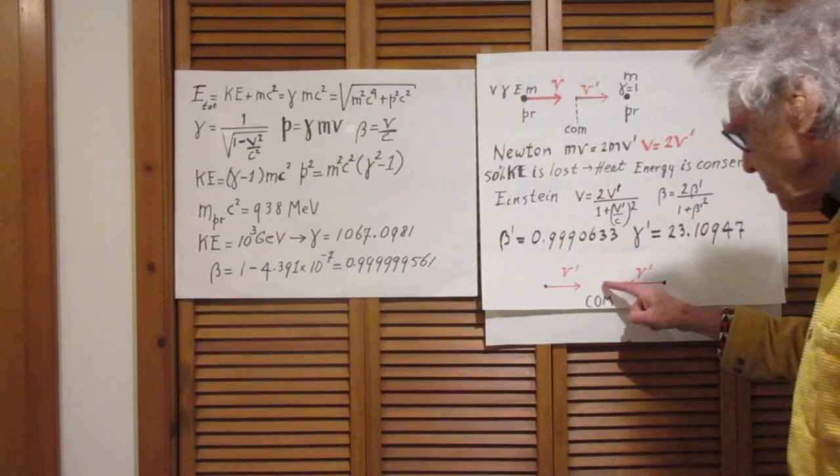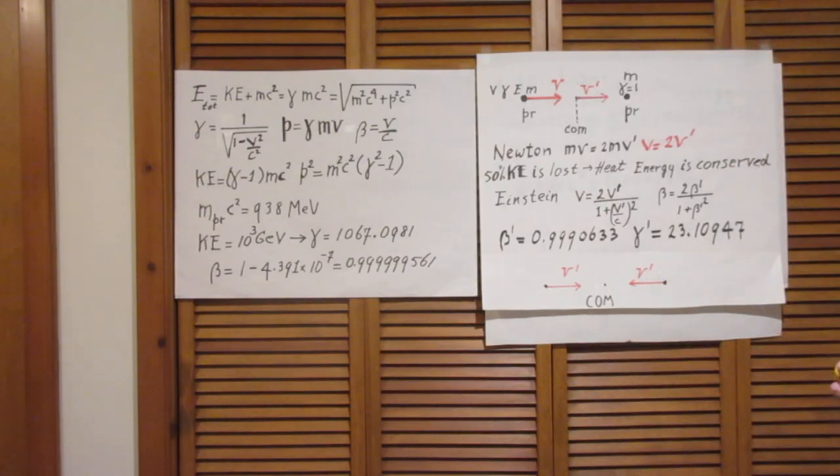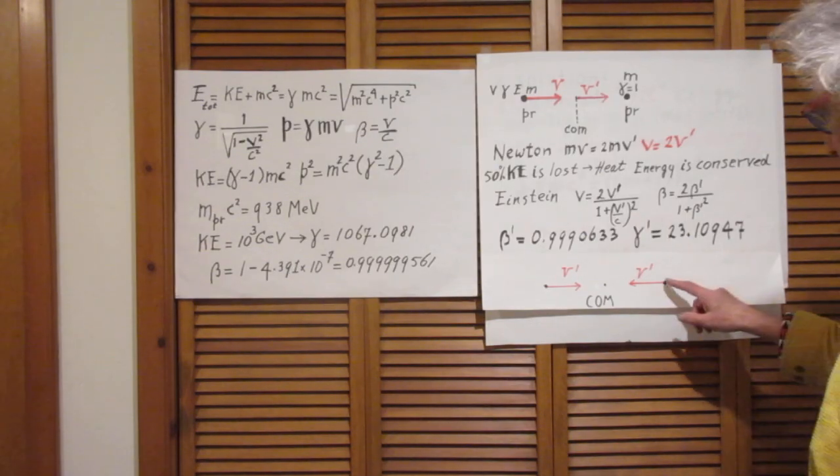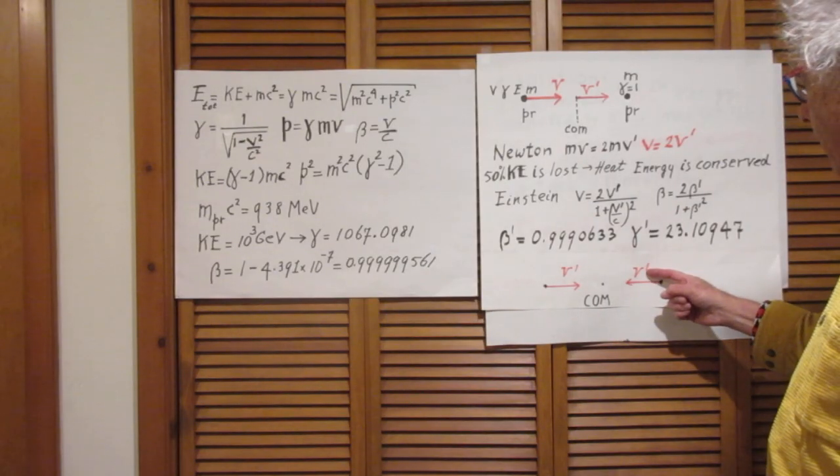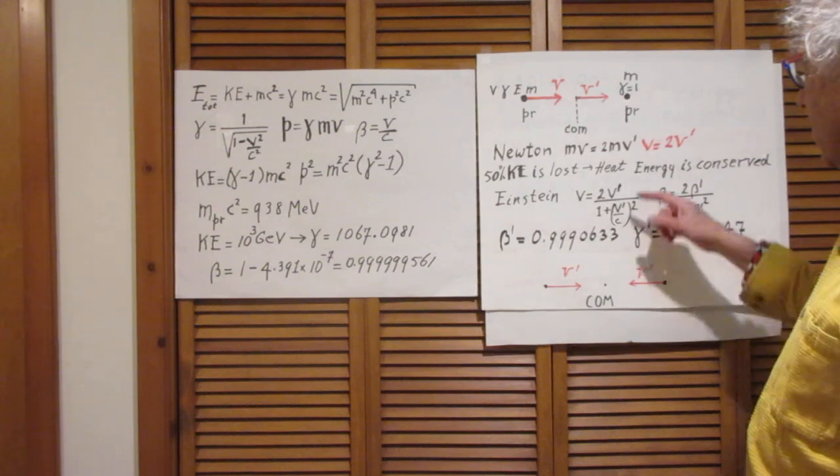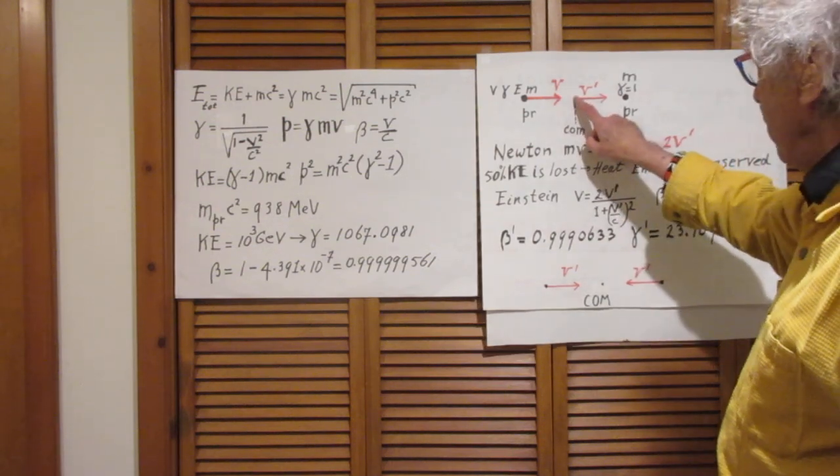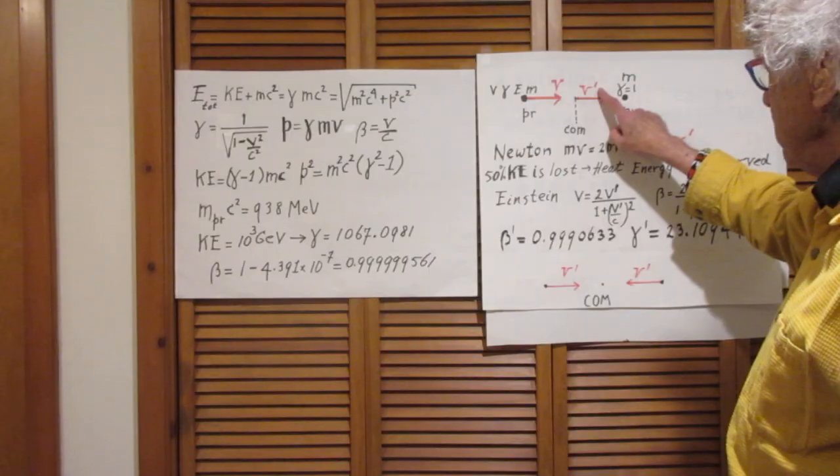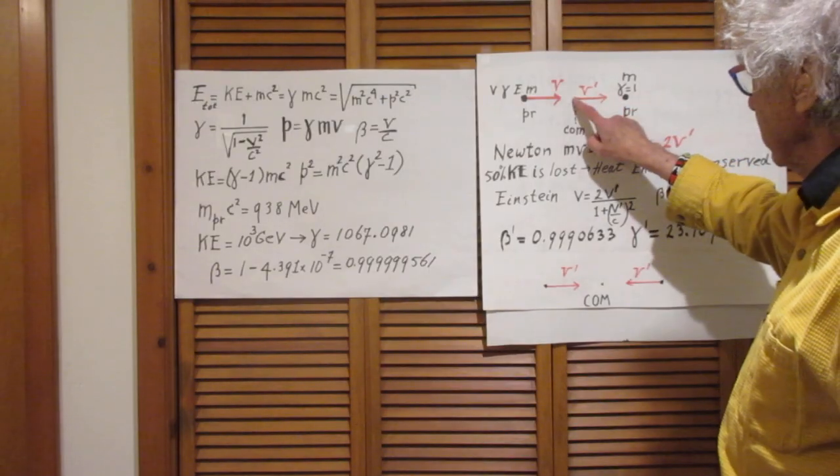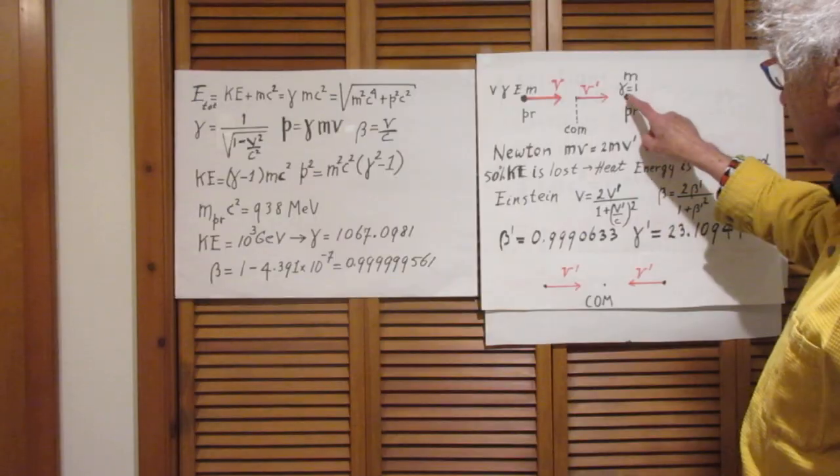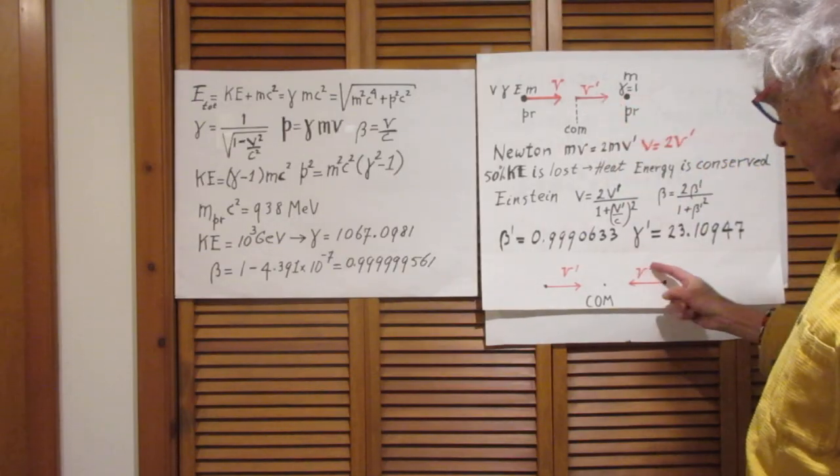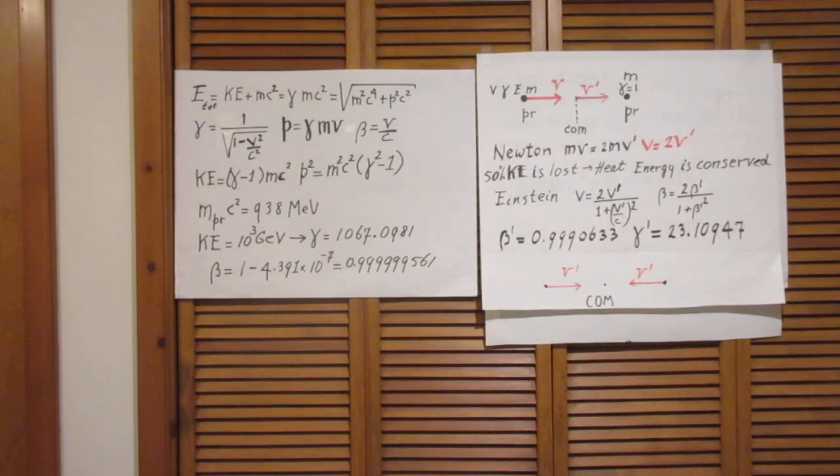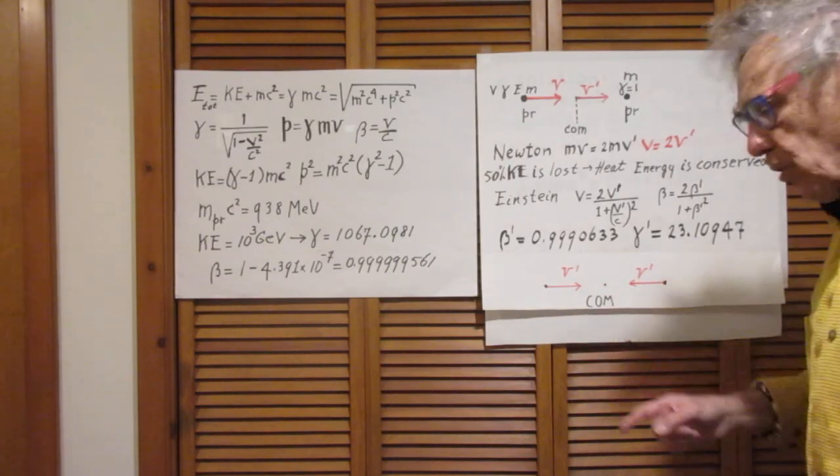So, if you were sitting in the center of mass, if that were your reference frame, this object would be coming to you with speed V'. That is obvious, because if the center of mass moves to this object with speed V', then in the reference frame of the center of mass, this object must move towards the center of mass with speed V'.